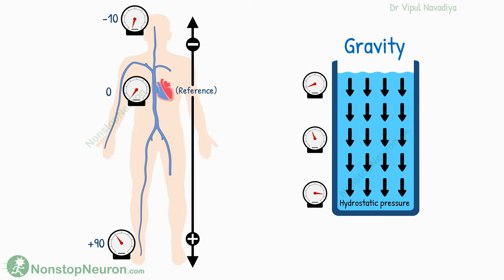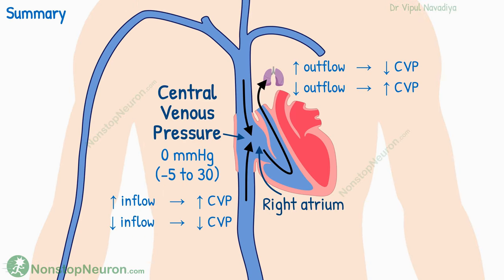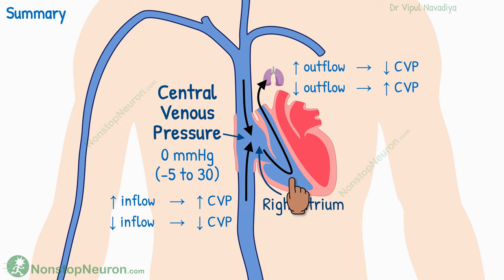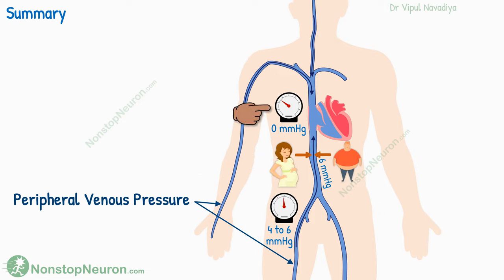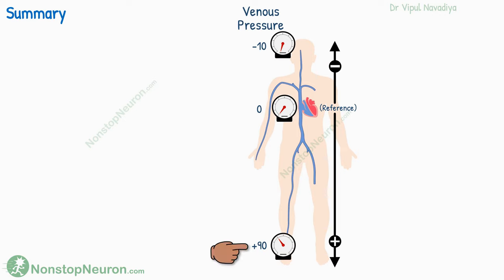So this was all about the venous pressure. Now let's have a quick summary. Central venous pressure is pressure in the right atrium — normally zero millimeters of mercury — and it's affected by how much blood is coming in and how much is going out. Due to the compression of large veins, the pressure in peripheral veins is 4 to 6 millimeters of mercury. It rises with rising central venous pressure, and the pressure in leg veins may rise as a consequence of the increase in intra-abdominal pressure too. Because of gravity, the pressure in the lower part of the body increases as we go lower from the level of the heart.